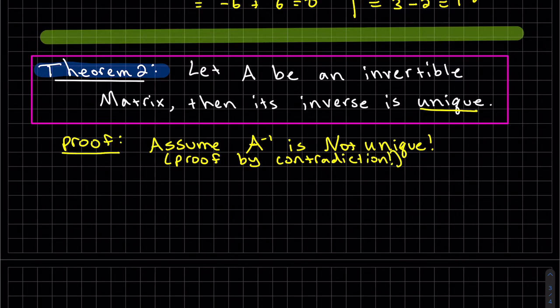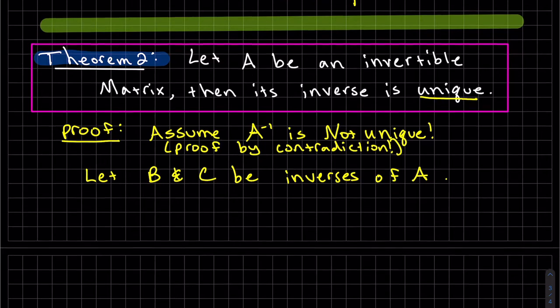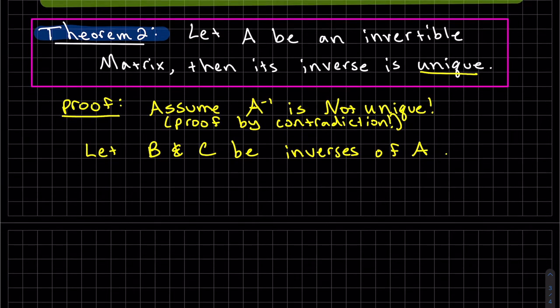So the theorem says, let A be an invertible matrix, and if that's true, then the inverse is unique. So what we're going to do is we're going to prove this, but we're going to assume that the inverse is not unique, and so clearly that's not what the proof says. So this is a proof by contradiction. We hope to get a contradiction, and once we do, then that means our original assumption isn't true. So we're going to let two matrices be inverses of A. That means they're not unique.